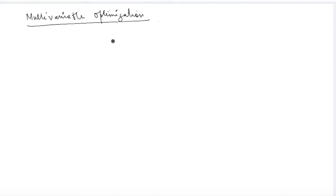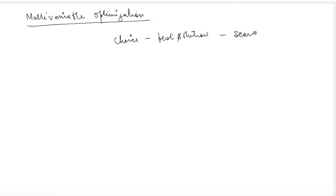In economics, we often deal with problems where we are trying to find the optimal solutions given the scarcity of resources. That's the very basic lesson of economics — you want to make a choice such that you find the best solution given the scarcity or the lack of resources. The mathematical tools needed to find that best solution is what we are going to read in this chapter.